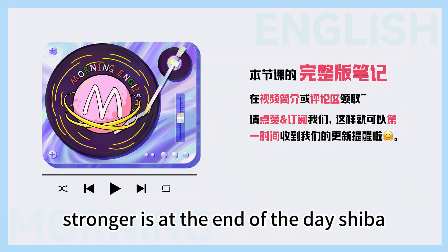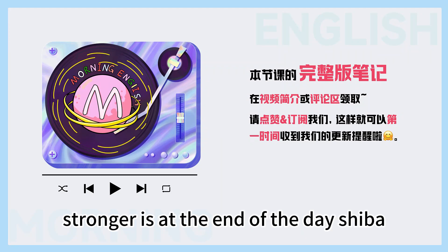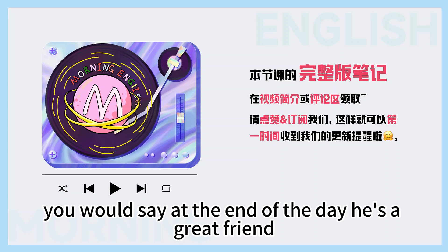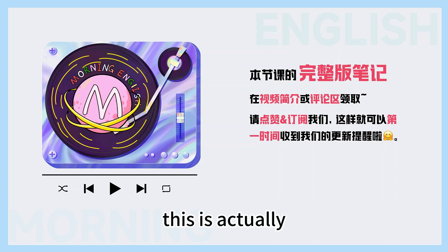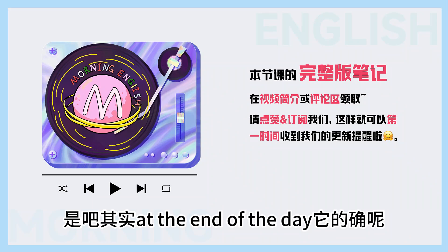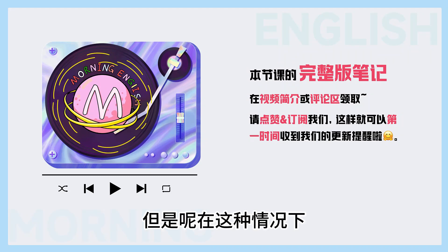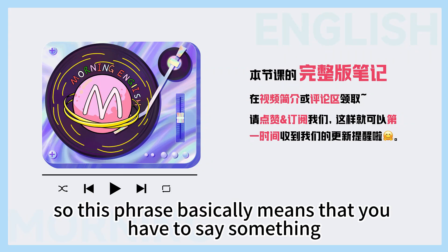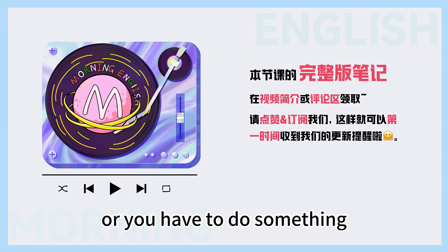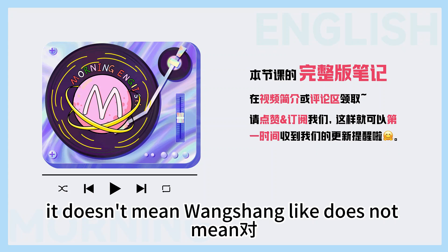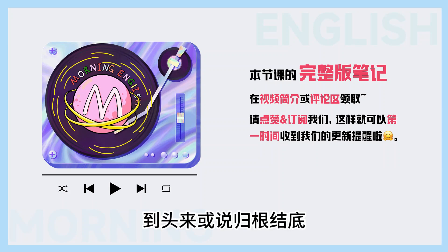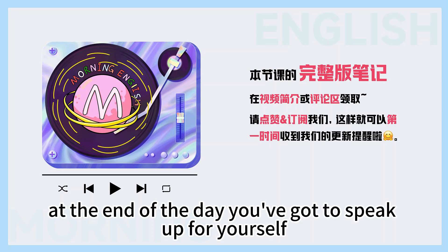Another one we can use to make our sentence stronger is 'at the end of the day', 是吧？So instead of saying 'he's a great friend,' you would say 'At the end of the day, he's a great friend.' This is a phrase that doesn't mean what you think it means. 在这里呢，他表示的意思是最终、到头来、或者说归根结底。At the end of the day, you've got to speak up for yourself.